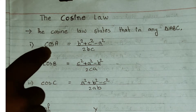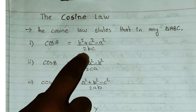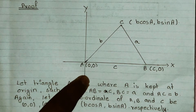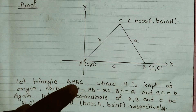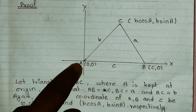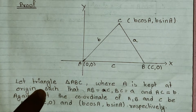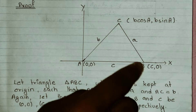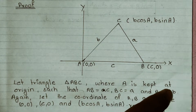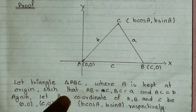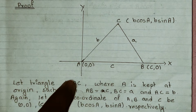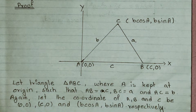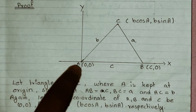Today we are going to prove the first formula: cos A equals b squared plus c squared minus a squared over 2bc. First, we draw triangle ABC where A is kept at the origin with coordinates (0, 0), such that AB equals c, BC equals a, and CA equals b. Let the coordinates of A, B, and C be (0,0), (c, 0), and (b cos A, b sin A) respectively.